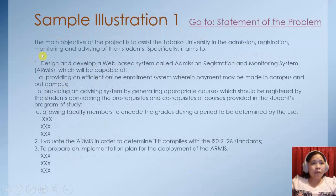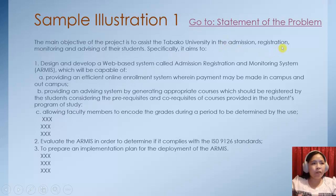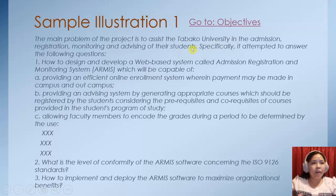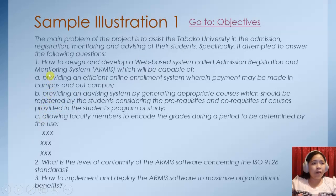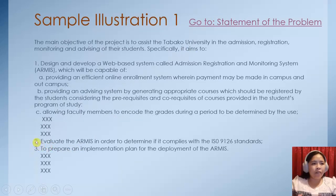This is an example of the main objective and specific objectives for our sample illustration. The main objective of the project is to assist the Tabako University in the admission, registration, monitoring, and advising of their students. If we go back to the statement of the problem, this is just similar to the main problem stated there. Now for the specific objectives: design and develop a web-based system called Admission, Registration, and Monitoring System — ARMYs — which will be capable of the following specific objectives. These are just similar to the specific questions in the statement of the problem, and so on for the second and third specific objectives.